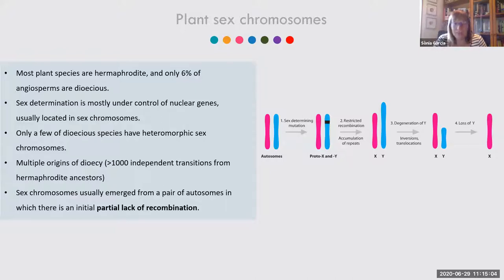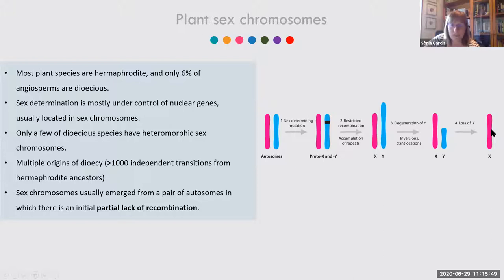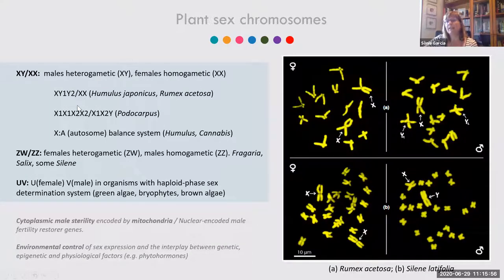Sex chromosomes have multiple independent origins — it is thought there are more than 1,000 independent transitions in plants from hermaphroditic ancestors. The ancestral condition is hermaphroditism, and sex chromosomes typically emerge from a pair of autosomes with an initial partial lack of recombination. A mutation determining sex restricts recombination, and over time this region can accumulate repeats, increase in size, and through inversions and translocations can decrease in size — and eventually in some species the Y chromosome can disappear.